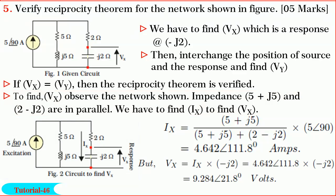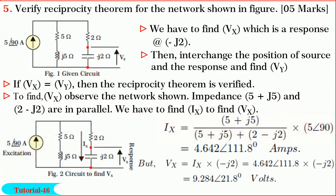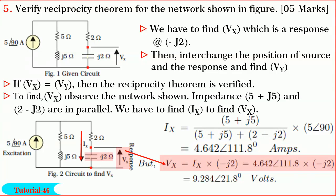To find Vx, observe the network — impedances 5 plus j5 and 2 minus j2 are in parallel. We have to find Ix to find Vx using the parallel branch theorem, which states that current in one branch equals the impedance of the other branch divided by the sum of the two parallel branch impedances, into the total current. By substituting the values, we get Ix equal to 4.642 angle 111.8, and Vx equals Ix into (minus j2). By substituting the values, we get Vx equal to 9.284 angle 21.8 volts.